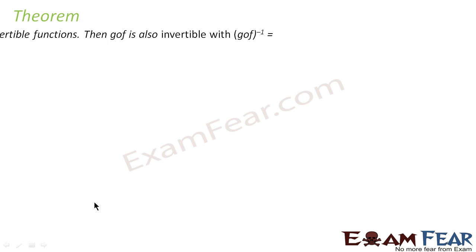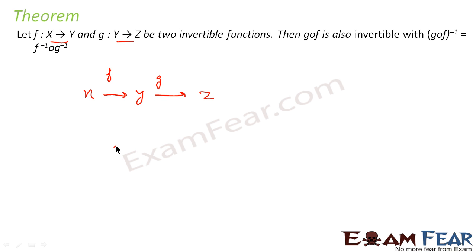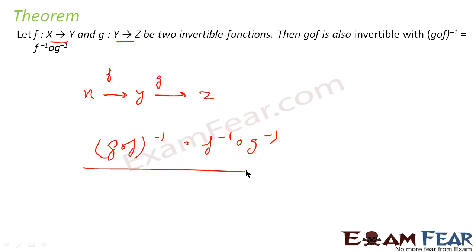We will take one more theorem. This theorem says that if there is a function f from X to Y and a function g from Y to Z, and both are invertible functions, then g∘f is also invertible. And (g∘f)⁻¹ will be equal to f⁻¹∘g⁻¹. This is the theorem — if two functions are invertible, then their composition is also invertible.